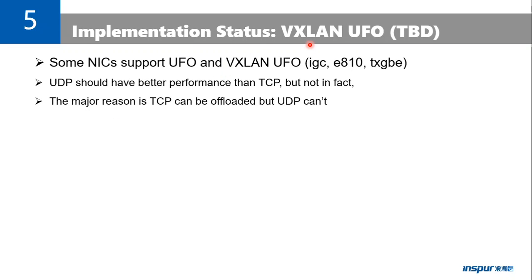For VXLAN UFO support, we have a plan. Some NICs can support UFO and VXLAN UFO — for example, Intel IGC driver, Intel E810, and TXGB, which is from a China-based vendor. In principle, UDP should have better performance than TCP, but in fact it doesn't, because TCP can be offloaded by hardware NICs but UDP cannot. So if we have VXLAN UFO and UFO support in hardware NICs, we can get good performance numbers for UDP.